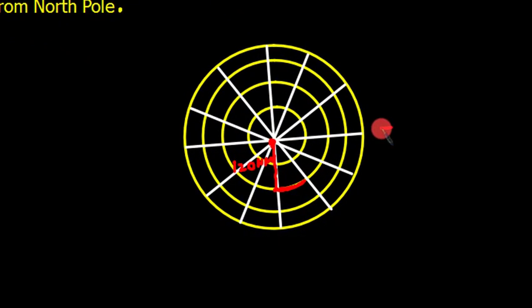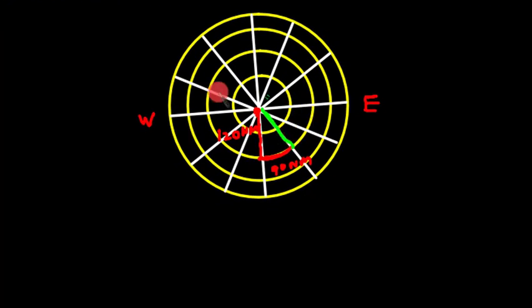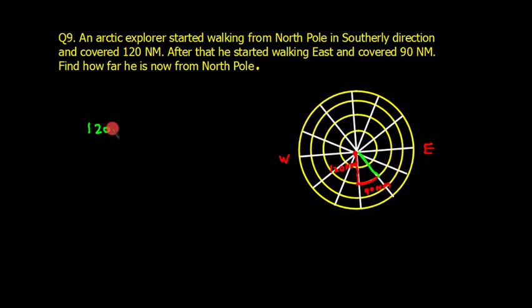By the way, this is the North Pole, so this direction will be east and this direction will be west. He moves in the eastern direction for 90 nautical miles. Obviously, his distance from the pole will remain the same, so the explorer is just 120 nautical miles from the North Pole. This distance will not change.